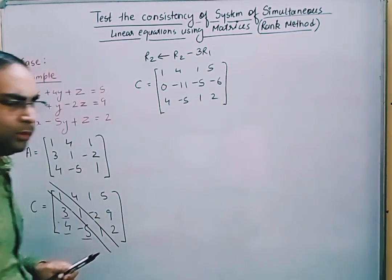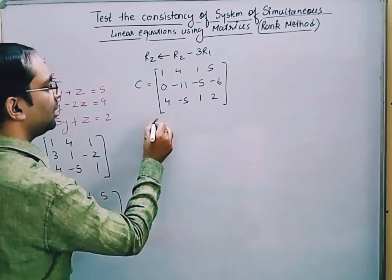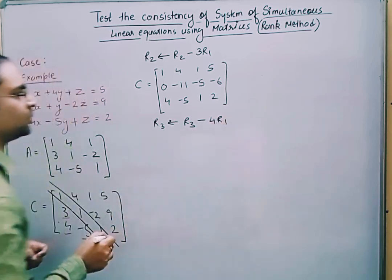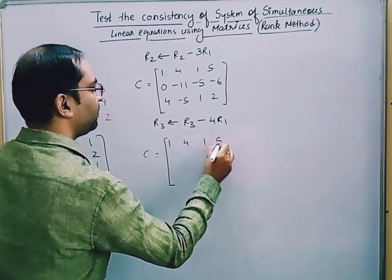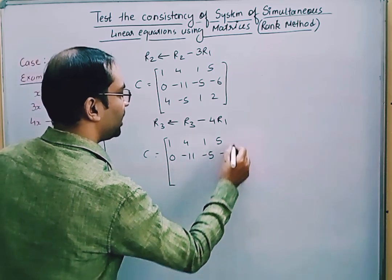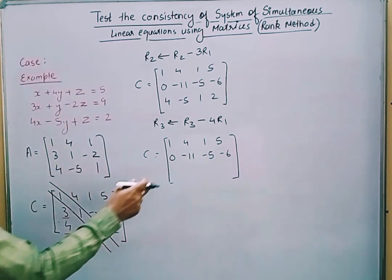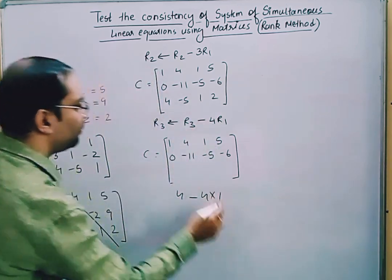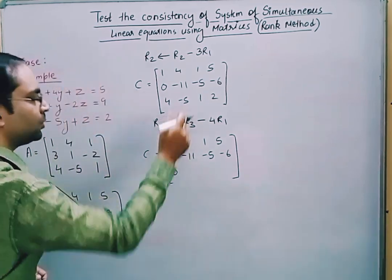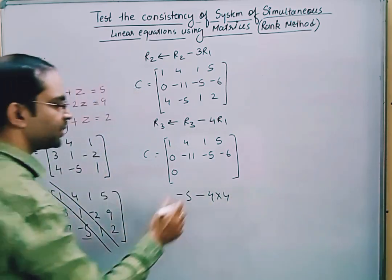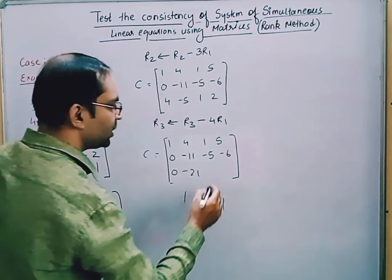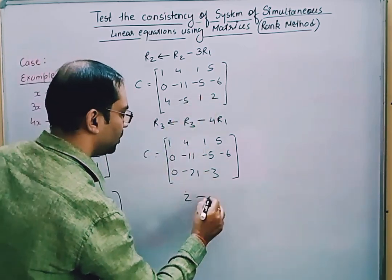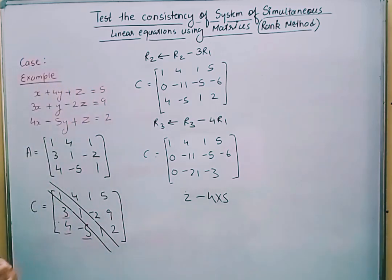Next, to eliminate the 4 in position (3,1), we perform R3 → R3 − 4R1. The new third row becomes: 4 − 4×1 = 0; −5 − 4×4 = −5 − 16 = −21; 1 − 4×1 = −3; and 2 − 4×5 = 2 − 20 = −18. So the matrix now has zeros in the first column below the pivot.